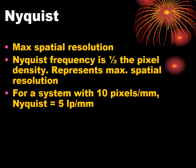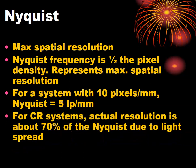The Nyquist theorem states that to achieve a given spatial resolution — say 5 line pairs per millimeter — you need to sample at least twice as many pixels per millimeter, so 10 pixels per millimeter. The Nyquist frequency is one half the pixel density. This indicates the best spatial resolution a given system can theoretically show. For CR systems, actual resolution is only about 70% of the Nyquist value, because the light spread function robs spatial resolution — so a system rated for 5 lp/mm may only deliver about 3.5 lp/mm.